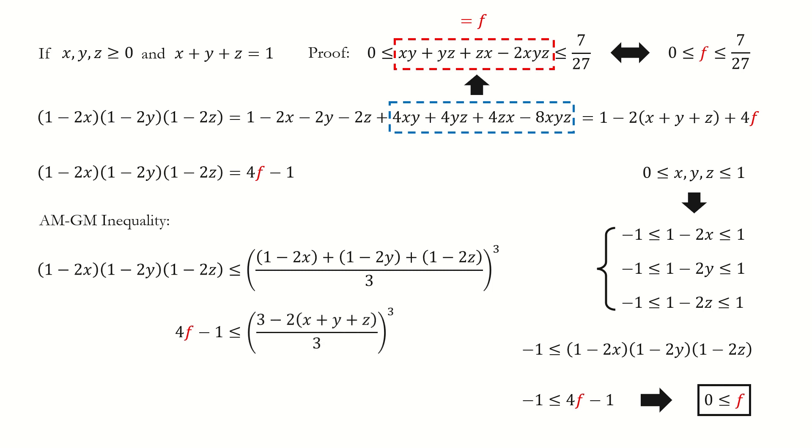For the right-hand side, we group the numerator this way, and then we replace the sum with 1. So we got the upper bound for f.